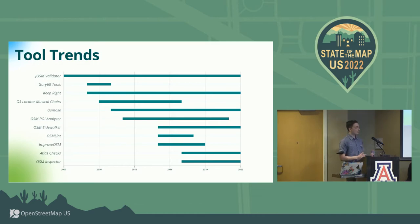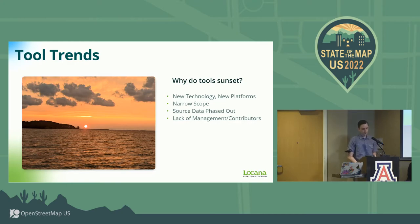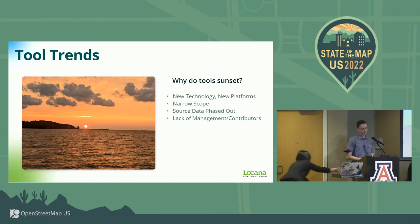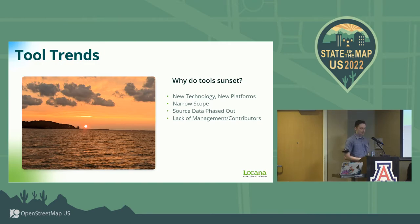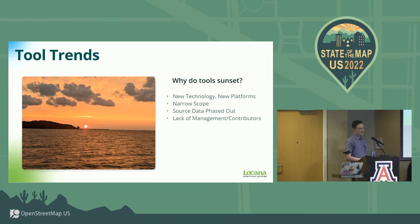Looking at more enduring platforms versus shorter-lived ones, we can see a few potential trends. What's causing a lot of these tools to lose support? For one, as new tools arise, they may improve upon existing validation criteria or absorb the scope into a more cohesive modular platform like Osmos or Atlas Checks. In some cases a tool may rely on a data source no longer produced — for example, OS Locator Musical Chairs, which validated Ordnance Survey UK street name data, was deprecated shortly after that dataset was discontinued in 2015. Tools with limited contributors also showed a steady decrease in commits.